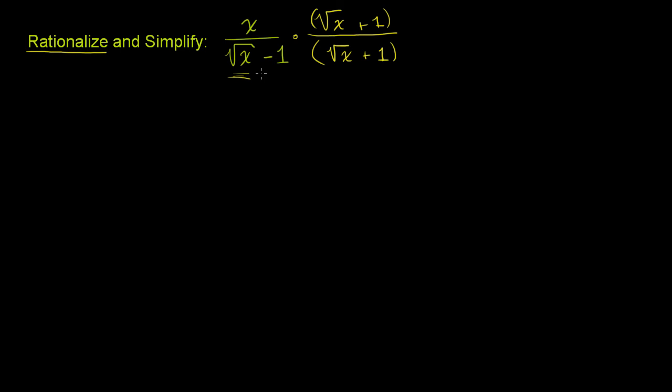And the key that I want to point out is why this is going to work. Why does it make sense to multiply by, once again, fancy word, the conjugate? And the conjugate will show up mainly when you're trying to rationalize denominators like this, or when you're trying to get imaginary numbers outside of denominators.